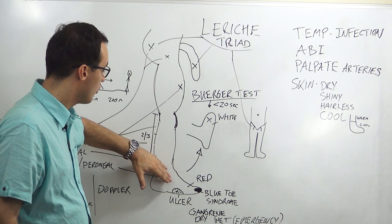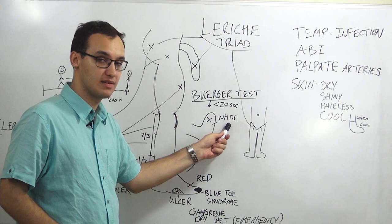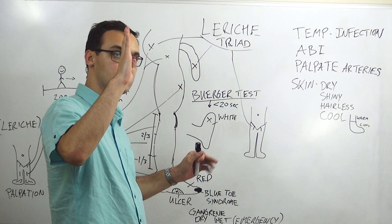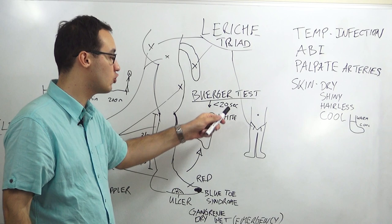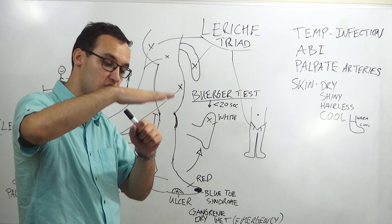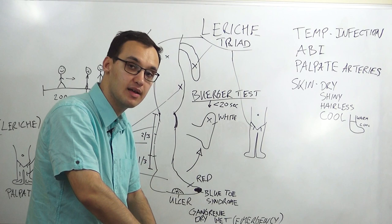The Buerger test is another test for peripheral artery disease. We take the foot and elevate it — blood flows from the foot into the body, and the foot becomes white and cold. When we put the leg down again it turns red. That return should take less than 20 seconds; if it takes longer, it's a typical sign of peripheral artery disease.